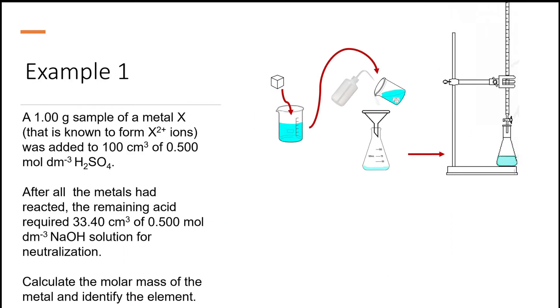Let's take a look at this problem. A one gram sample of a metal X was added to 100 ml of 0.5 molar sulfuric acid. The reaction equation is this and the molar ratio between X and sulfuric acid is 1:1 because X forms a +2 ion. After all the metal has reacted, the remaining acid required...